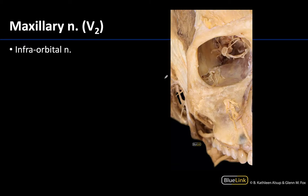Let's turn our attention to the branches of the maxillary nerve or V2, starting with the big one: the infraorbital nerve. You can see it here in the floor of the orbit before it enters the infraorbital canal, where it will give off some alveolar branches. You can also see all its branches exiting through the infraorbital foramen. The infraorbital nerve is the terminal branch of V2 and is typically the largest branch.